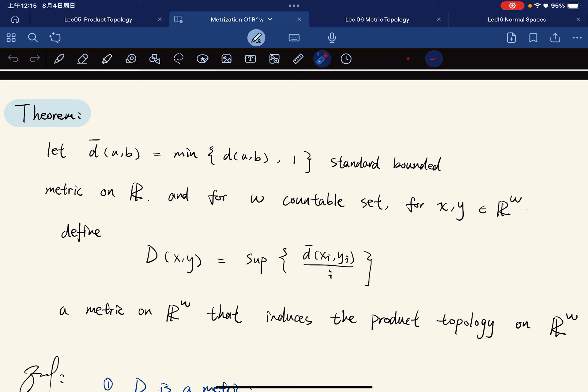So what is R^ω? It's a countable product of the real line. So the product topology is metrizable. Here's the precise statement.